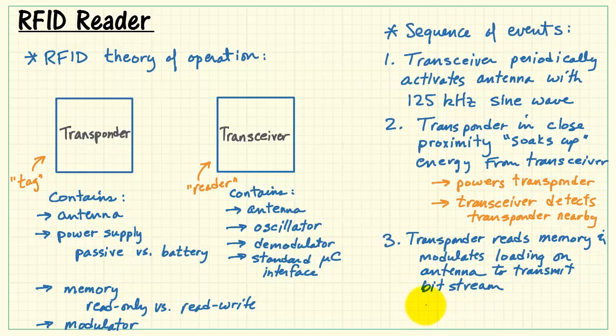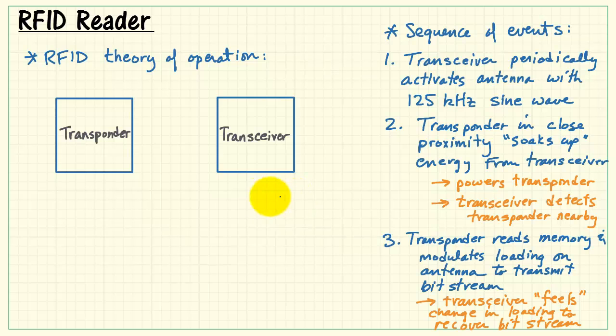The transponder, in turn, reads its memory, and then modulates the loading on its own antenna to transmit the bit stream. We say that the transceiver feels, so to speak, this change in loading, and that's how it recovers the bit stream.